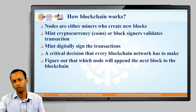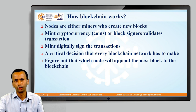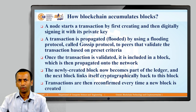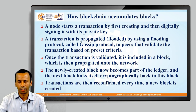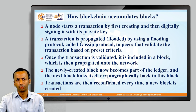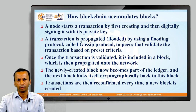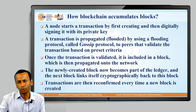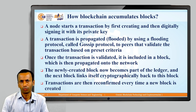Once all the nodes in the network have agreed, it is decided which node is going to add that particular block or record that particular transaction. A node starts the transaction by first creating it and then digitally signing it with its private key. Any node in the network can start the transaction — we call this the creation of the transaction — and when the transaction is created, it is digitally signed with its private key, just as in information security where a private key is used to sign a digital document.